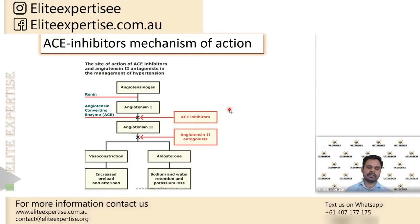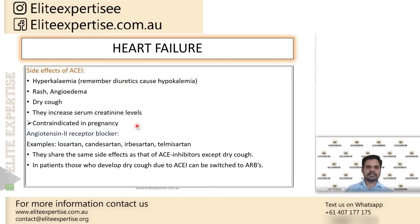The mechanism of action of ACE inhibitors: they mainly prevent the conversion of angiotensin-1 to angiotensin-2. That is the mechanism of action of ACE inhibitors.